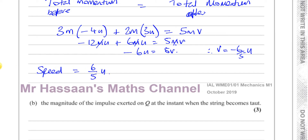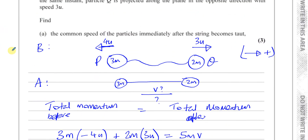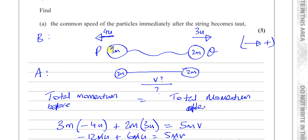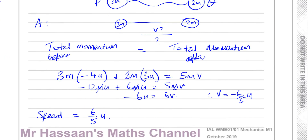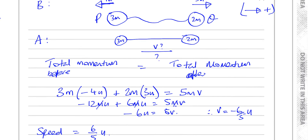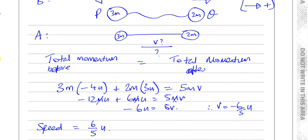If they said find the velocity or find the speed and the direction, then we would say it's 6/5 u in the direction that P was moving in initially. P was moving in the negative direction, and the final velocity is also negative, so the velocity direction is the same as P's initial direction. You don't mention left or right in an answer — in this question it doesn't matter because they're not asking about direction.